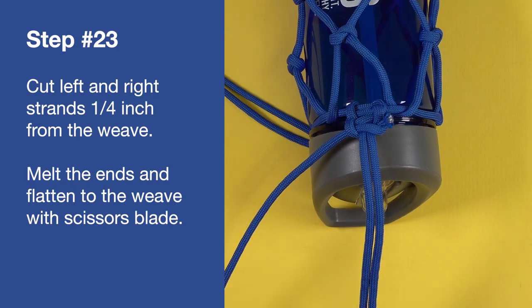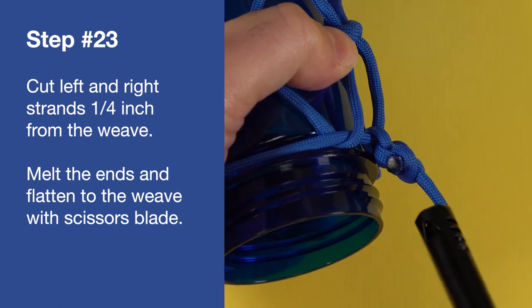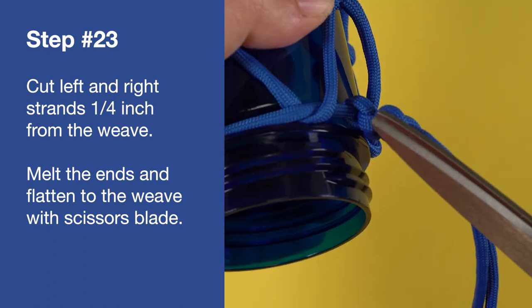Cut the left and right strands a quarter inch from the weave. Melt the ends and flatten to the weave with the scissors blade.